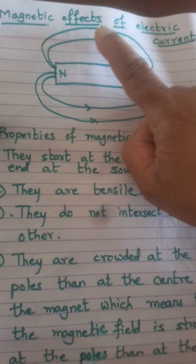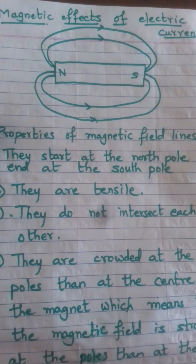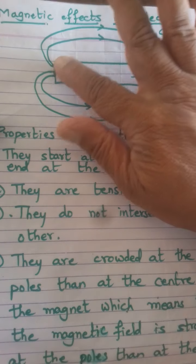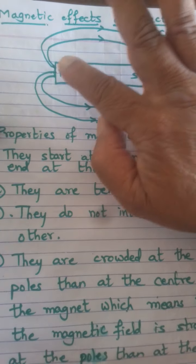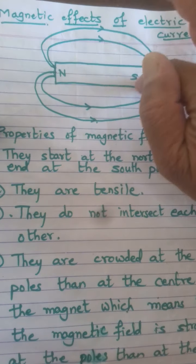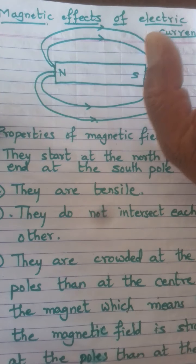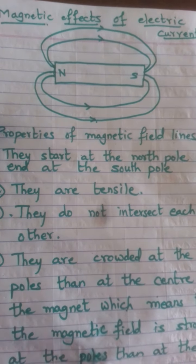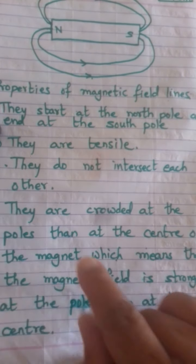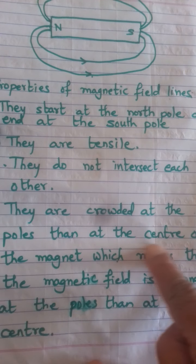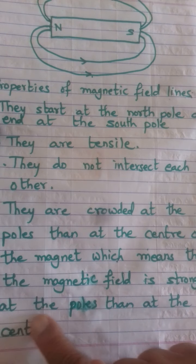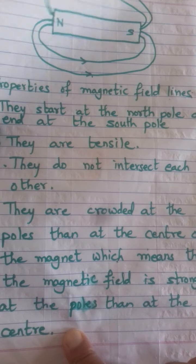The second property is they never intersect each other. The third property is they are tensile — tensile means they are not loose, like a loose thread. The next property is they are crowded at the poles more than at the center of the magnet, which means the magnetic field is stronger at the poles.